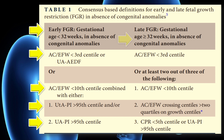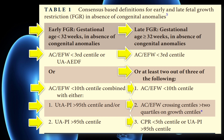Late FGR requires at least two out of three of the following features: the abdominal circumference or estimated fetal weight is less than the 10th centile; the abdominal circumference or estimated fetal weight crossing more than two quartiles on growth centiles; or the cerebroplacental ratio is less than the 5th centile, or umbilical artery pulsatility index is above the 95th centile.